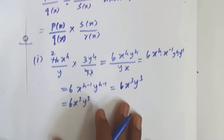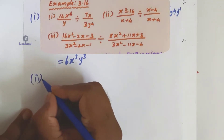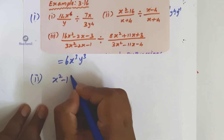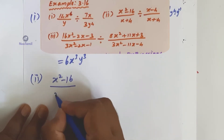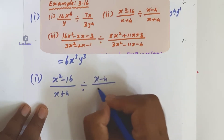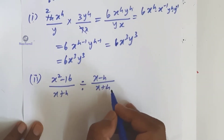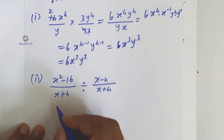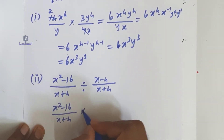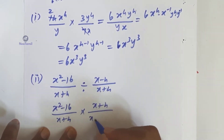Now, sub-division 2: the question is x squared minus 16, divided by x plus 4, divided by x minus 4 divided by x plus 4. With two rational expressions and a divide symbol, the first expression is x squared minus 16 divided by x plus 4. The divide symbol becomes multiply, putting the second expression in reciprocal: x plus 4 divided by x minus 4.